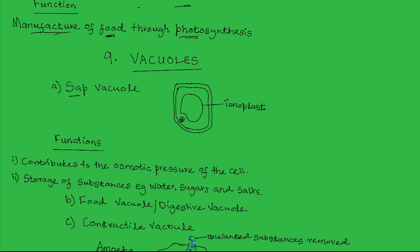The three types are: one, sap vacuole. Sap vacuole is usually large and centrally placed and is surrounded by a membrane known as the tonoplast. Sap vacuoles occur in plant and animal cells, only that in animal cells, the vacuoles are very small and temporary. But in plant cells, they are large and they occupy the central position of most of the plant cells.